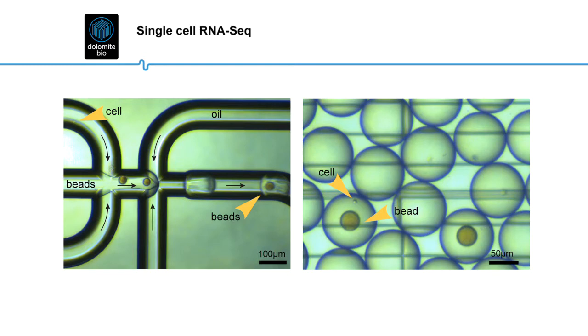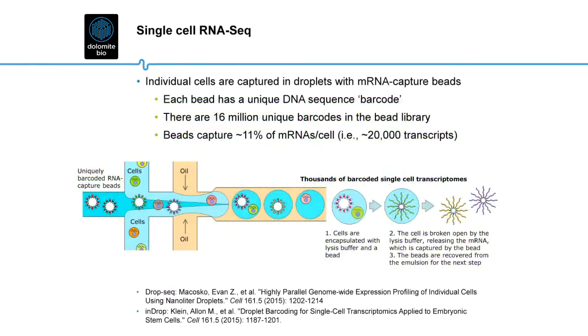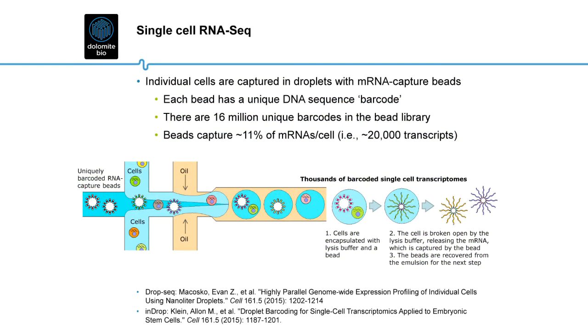The key aim is to capture single cells with single beads in droplets. The beads have mRNA capture oligos on them. Part of the oligo sequence is a barcode that is the same for all oligos on one bead and is unique to each bead in the library. Another part of the oligo is a poly-DT sequence, which captures mRNA by binding to its poly-A tail. The two aqueous streams, containing barcoded beads or cells, mix together about 100 micrometers before the microfluidic junction.